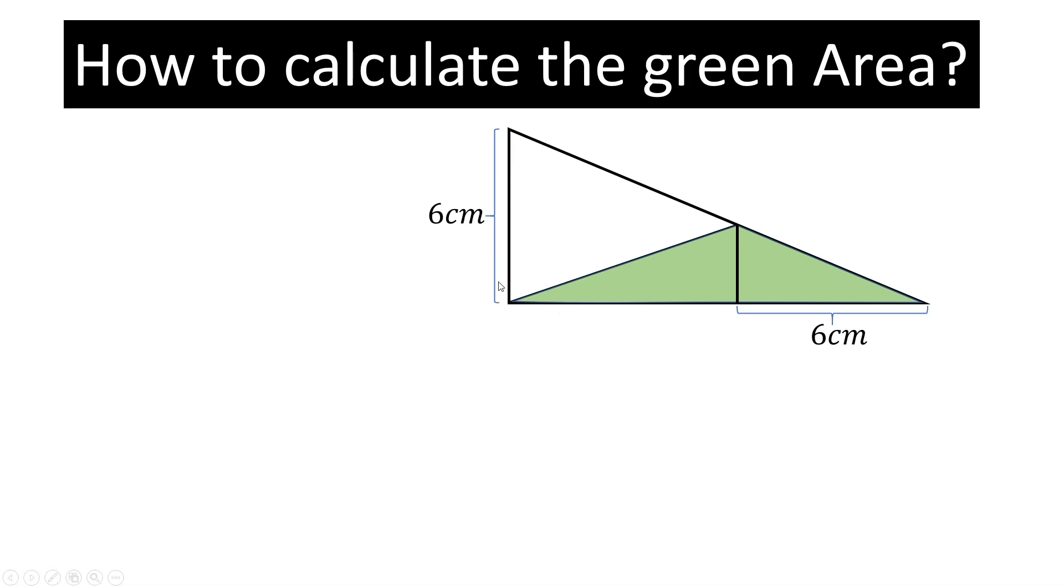In this question, this side is given which is 6 centimeters, and this length is given which is also 6 centimeters. We have to find all this green area. So let the height of this triangle be h and this length be a.